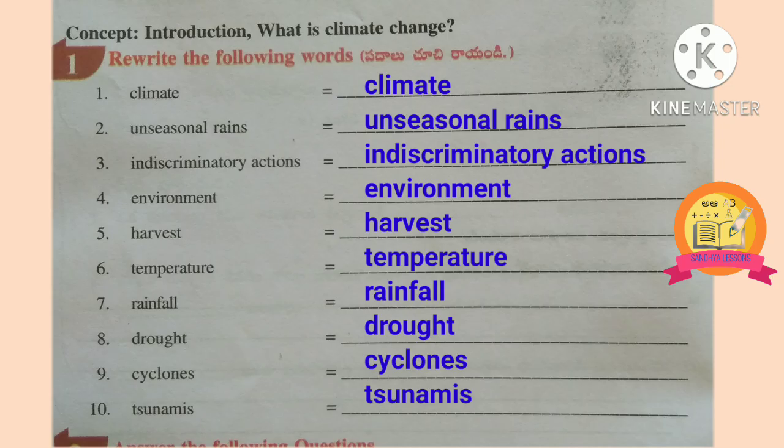Climate, Unseasonal Rains, Indiscriminatory Actions, Environment, Harvest, Temperature, Rainfall, Drought, Cyclones, Tsunamis.